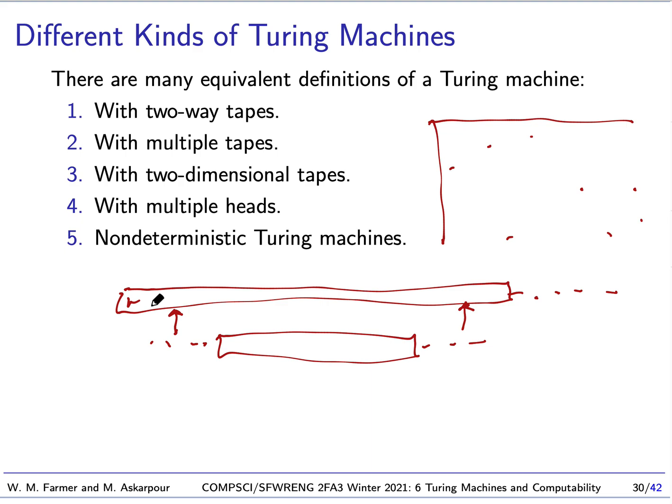There are many possibilities. And, like I said, of all these possibilities, they have been proven to be equivalent. So, people who are working with Turing machines, they often shift to the kind of Turing machine that's most convenient for what they're doing.